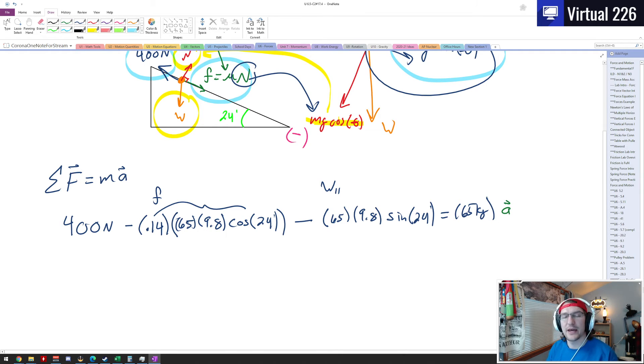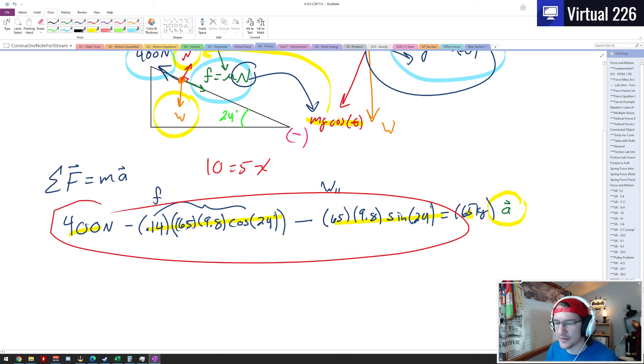As we saw in the example we did with the child going down the slide, we have all of the numbers here. The only thing we're looking for is the acceleration. Even though there's a lot of numbers here, it's pretty much done. It's pretty much just saying like 10 equals 5x. You can solve that. Just do the same thing here. We just have to take care of all of this stuff and combine it, and we want to make sure we do that carefully so we don't make any errors.